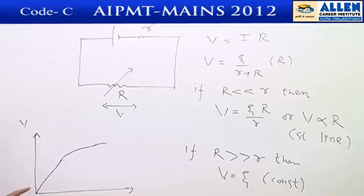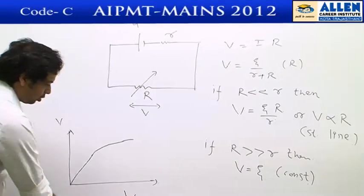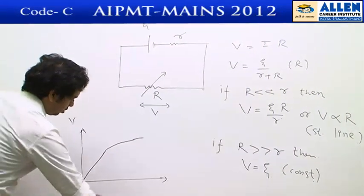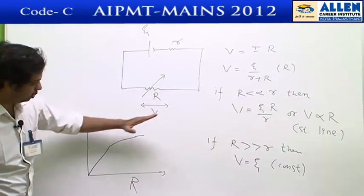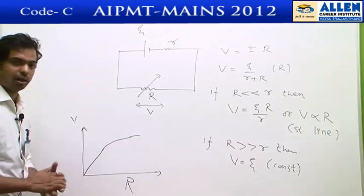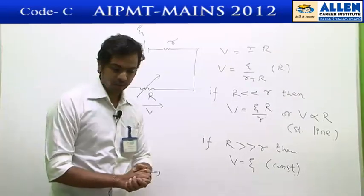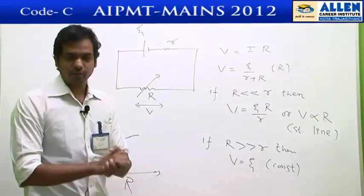So we can conclude voltage across resistance and resistance graph will be linear then going to constant part. So correct option will be first option.